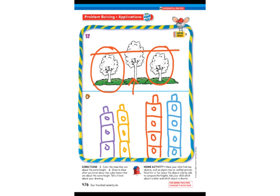Now, at home, you can find two objects such as plastic toys or stuffed animals, and place the objects right side by side each other to compare the heights. You can grab two objects around your house and compare the heights. Ask yourself: which object is taller? Which object is shorter? So you can also, at home, practice measuring objects by height. I hope you enjoyed this lesson, 11.2 of GoMath, and thanks for watching.